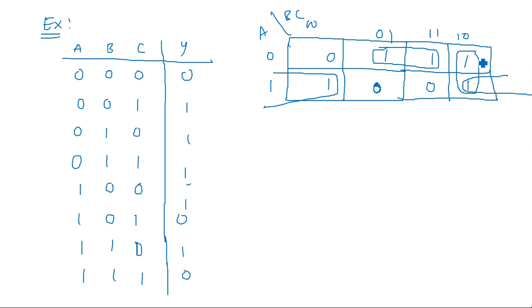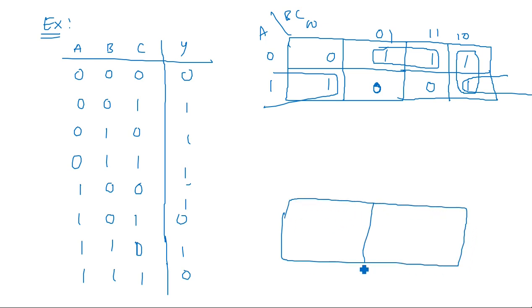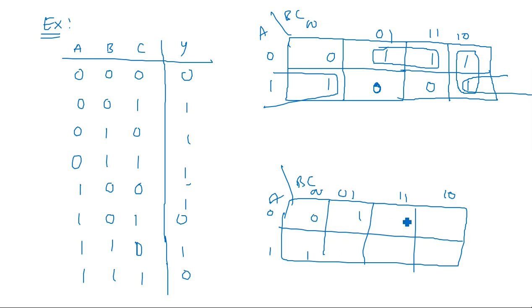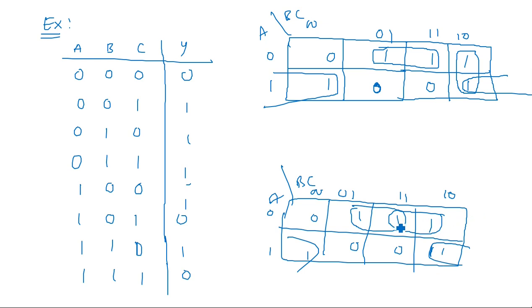This cell has a chance to be mapped with either of two neighbors. Suppose two people solve the same problem and one maps one way and another maps differently — that is fine. There is no restriction on which cells you group, but every 1 must be covered. If a 1 is left alone, you must map that one alone and write its expression.